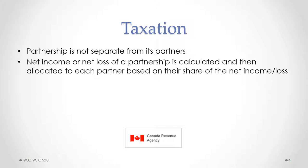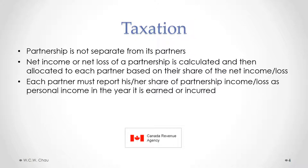The percentage amount of each partner's share is determined either under the default rules of the Partnerships Act or under some other split agreed to in a partnership agreement. The profit or loss is then allocated to each partner, and each partner must report their share of the partnership income or loss as personal income in the year it is earned or incurred.